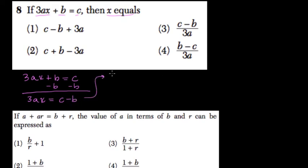Then we write this, we have 3ax equals c minus b. Well, 3 times a is a number, and we want x all by itself, so we divide both sides by 3a.